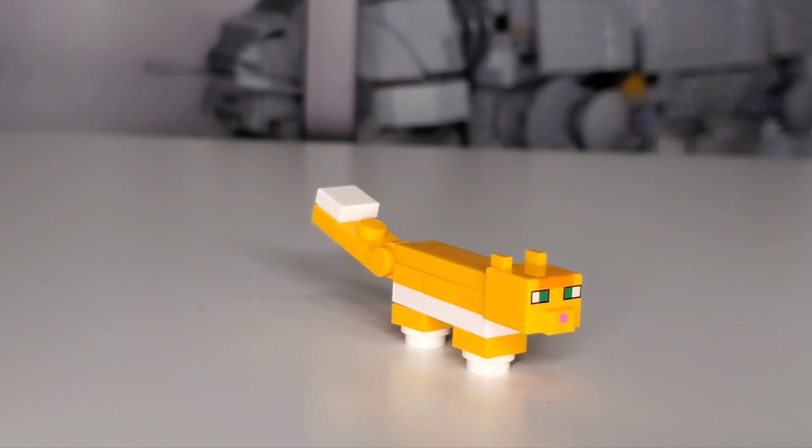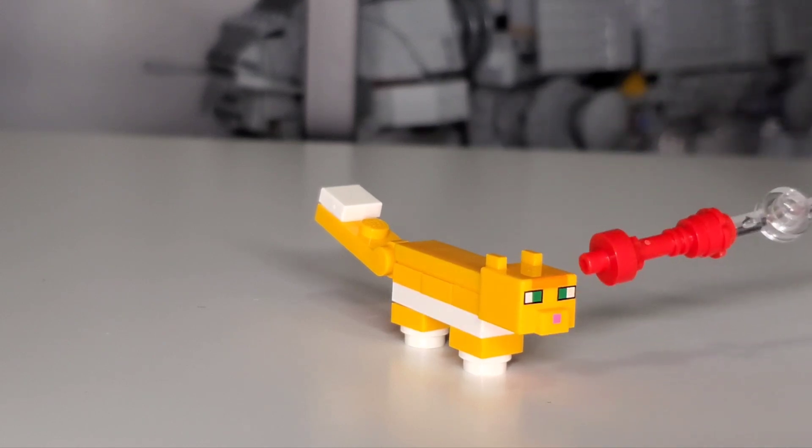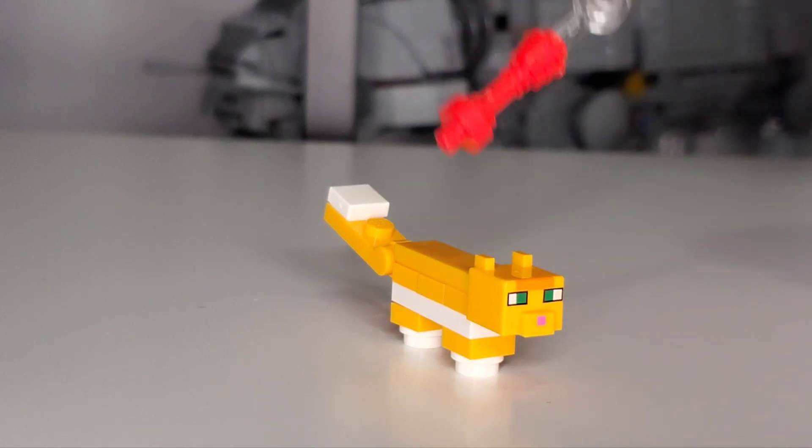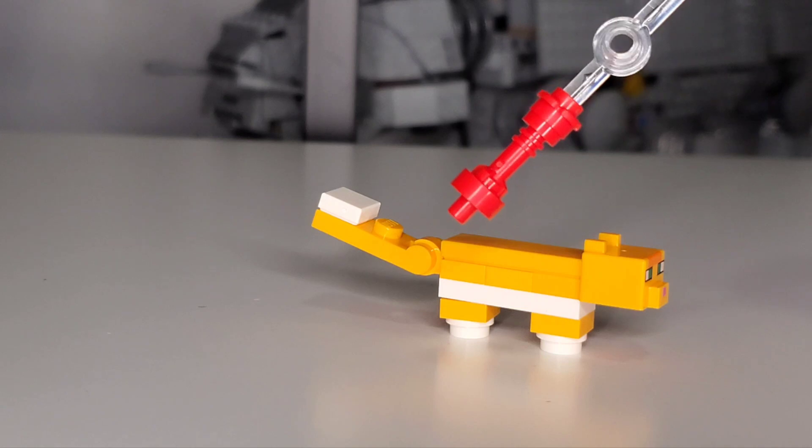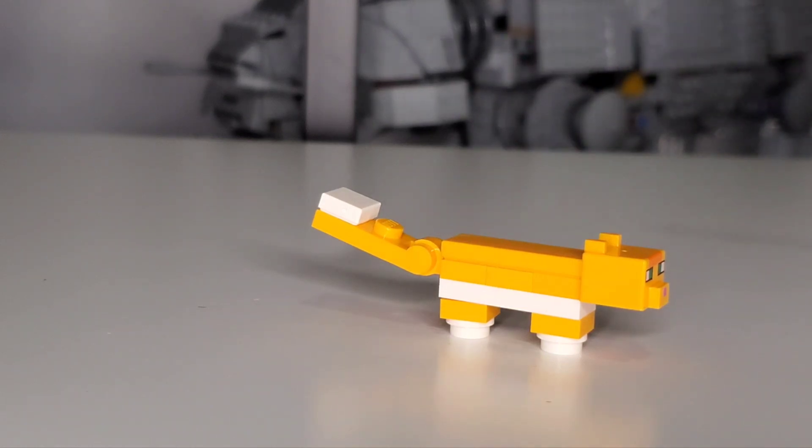Now our first minifigure of the set is of course Garfield here with a pink nose, some green eyes, and of course a little bit of an orange spot at the top which is a bit of a darker orange than the rest of the cat. Now the cat itself is a mixture of orange and white, and for a cat it's a good cat.